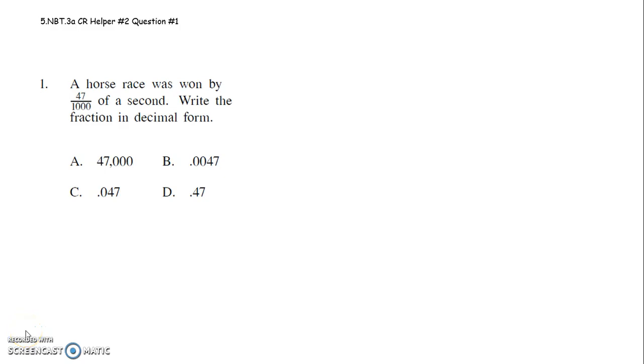Alright, 6th graders, this video is to help you with question 1 on your second CR. It says a horse race was won by 47 thousandths of a second. Write the fraction in decimal form.